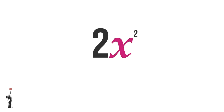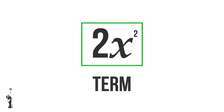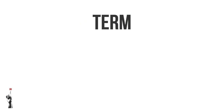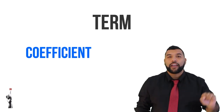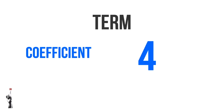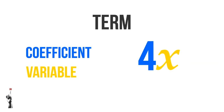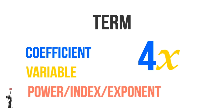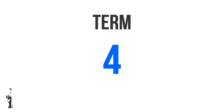Now, what happens if we don't just speak about a variable, but if we put a number with a variable, like 2X squared? We no longer just speak about a variable, but we speak about a term. So what are terms? Terms consist of three components. One, a coefficient — the number in front of the variable. Two, a letter associated with it, which is called a variable. And three, the variable could have a power, index, or exponent on top of it. If a term does not contain a variable but it's just a number, we call that a constant.